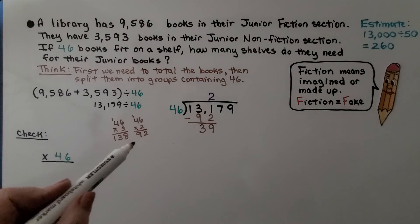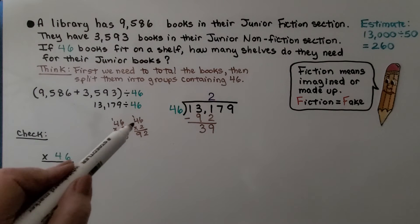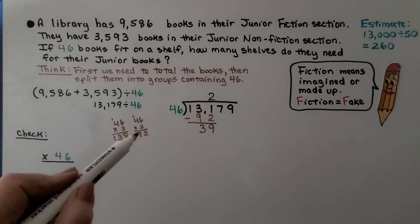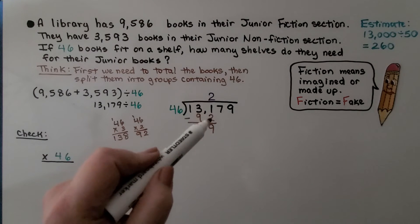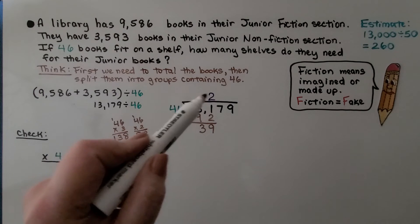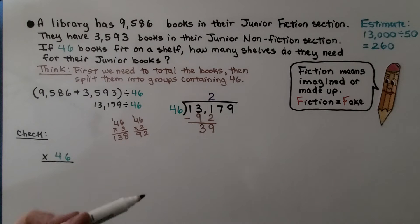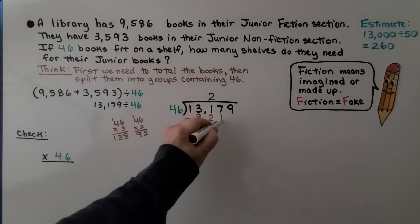Do a little multiplication on the side. We see 3 times would be too much. That would be 138. But if we do it times 2, that would be 92. So we put 2 above the 1 because we're doing 131. And 46 times 2 is 92. We subtract and get 39. Now it's the 7's turn to come down.